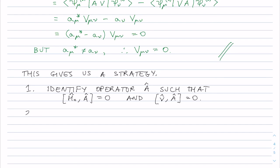Two: choose eigenfunctions which are simultaneously eigenvectors of H naught and A, and these are the good ones.